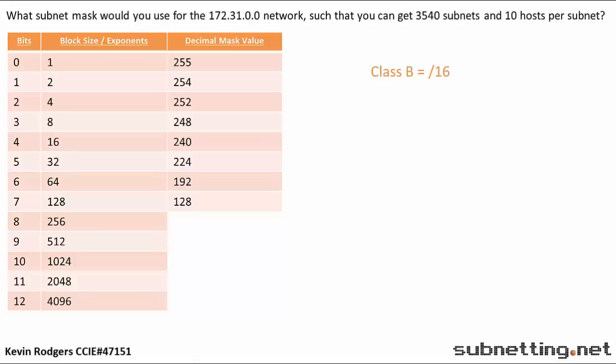Next we'll find the required mask. We have to find the first number in our cheat sheet that has a value above 3,540 in the block size exponent column. In this case, that is 4,096. So we have to add 12 subnet bits to allow more than 3,540 subnets.